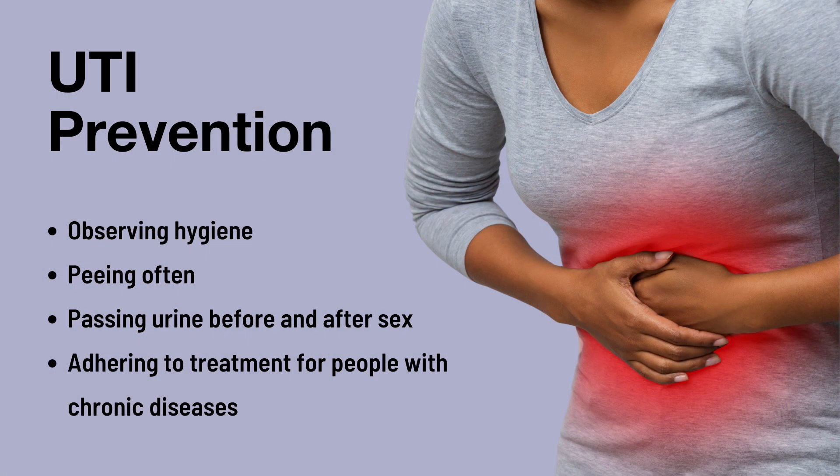Some of the things you can do to prevent UTIs is observing hygiene, wiping from front to back instead of back to front, peeing often whenever you have an urge, and passing urine before and after sex.